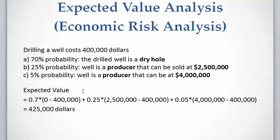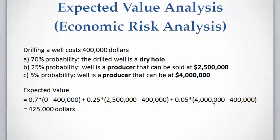The expected value of the failure case is 70% multiplied by negative $400,000 of cost, with no income. For the first success case, there is a 25% probability of a producer well sold at $2.5 million, minus the $400,000 drilling cost. For the second success case, there is a 5% probability yielding $4 million of immediate income minus the $400,000 drilling cost. The summation gives an expected value of $425,000 for this project.